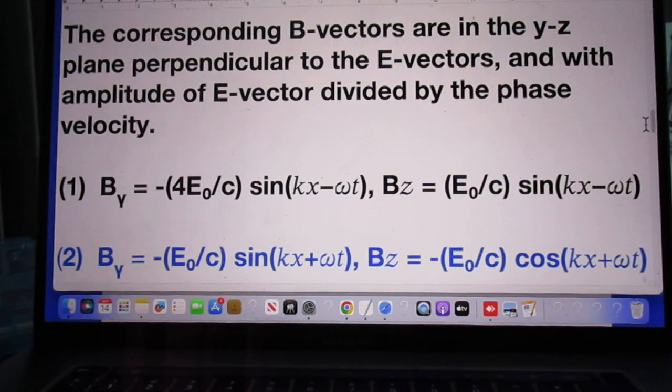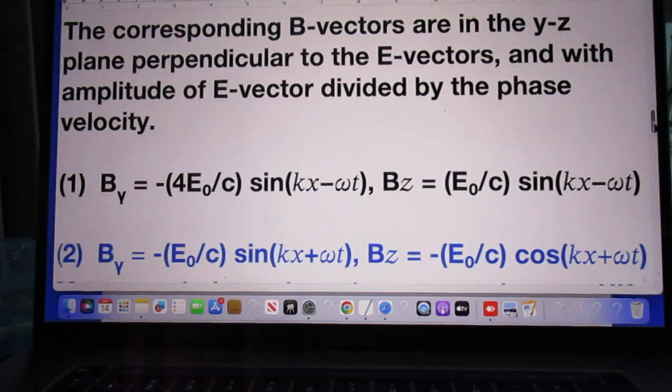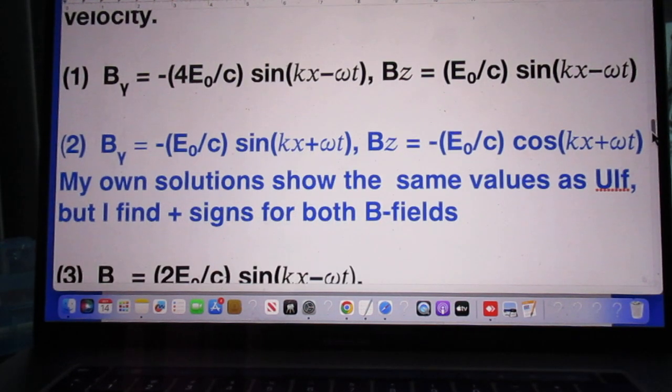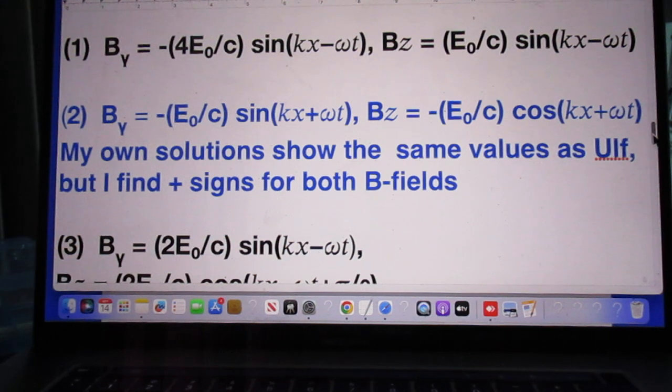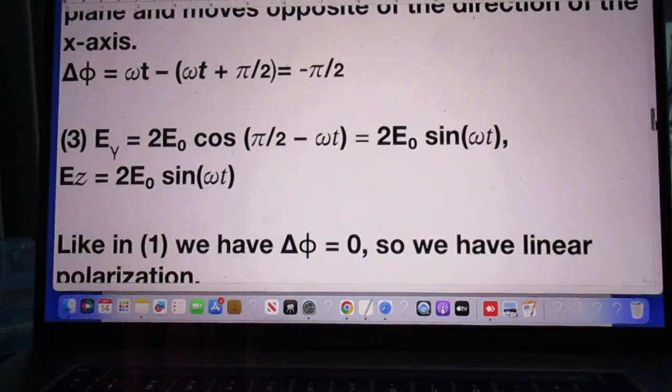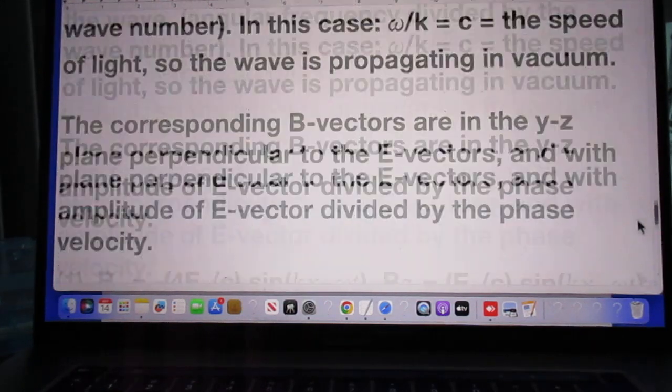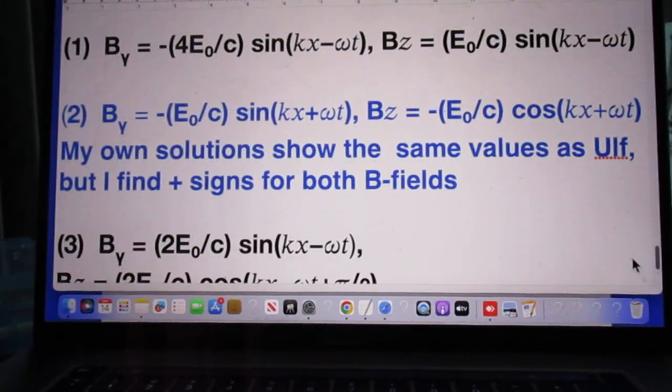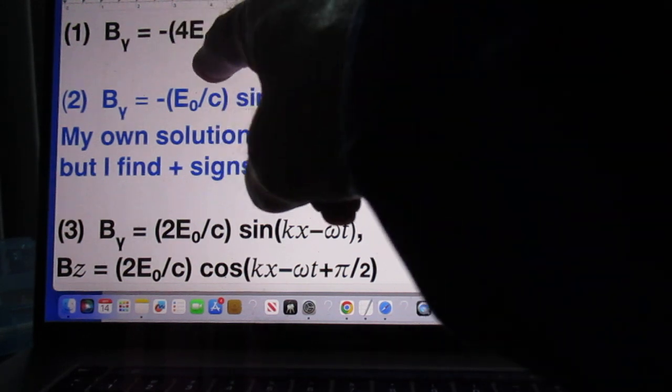The corresponding B-vectors are in the YZ plane perpendicular to the E-vectors and with the amplitude of E vector divided by the phase velocity, which is c. And so you see that here. This is for case one. And this is his solution for case two. Where is it? Here. So this is his solution.